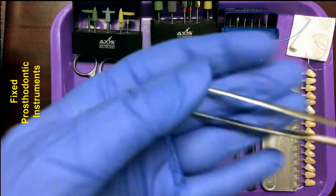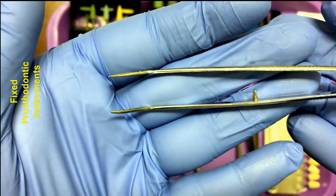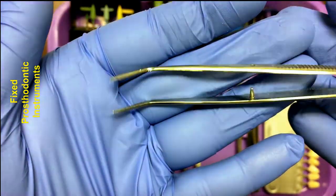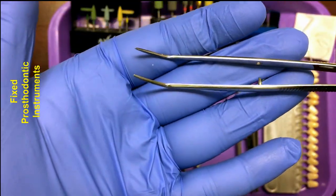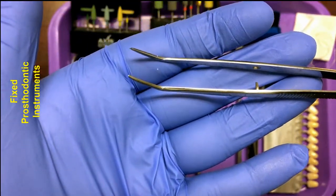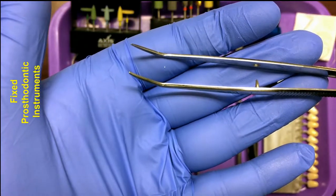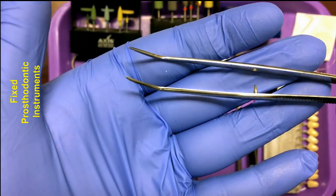Then we have a cotton pliers. This one is a non-locking cotton pliers. Cotton pliers can be used to remove or place small objects in the mouth, such as cotton rolls, cotton pellets, or any other small items that are needed.